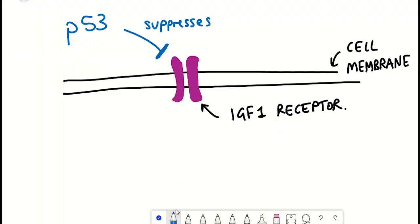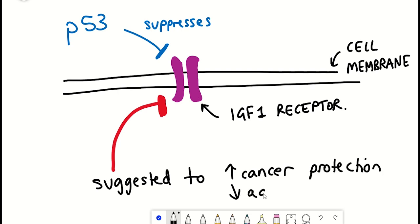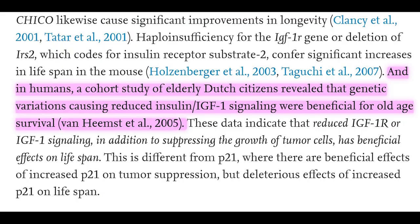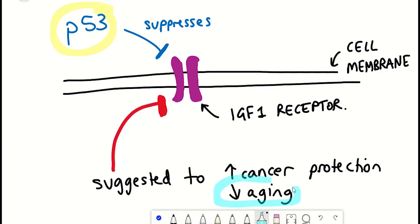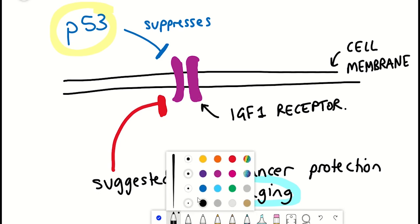So pulling all this information together, it suggests that reduced IGF-1 receptor, or signaling through this IGF-1 nutrient signaling pathway, as well as being able to suppress growth of tumor cells, has beneficial effects on lifespan. And this is further seen in a human cohort study of elderly Dutch citizens that showed that genetic variations that caused a reduced IGF-1 signaling were beneficial for old age and survival. So this seems to suggest that aging may not necessarily be the price we pay for cancer protection.